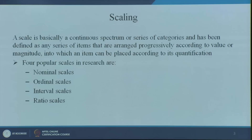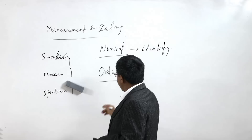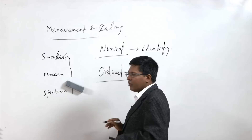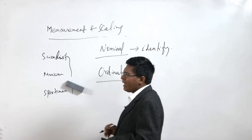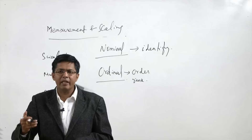The next is the ordinal scale. What comes to your mind when you hear the word ordinal? If you break the term, there is something called an order — order or rank. So an ordinal scale is something where you are trying to order something, or put something in a hierarchy from greater to lesser, in descending or ascending order.